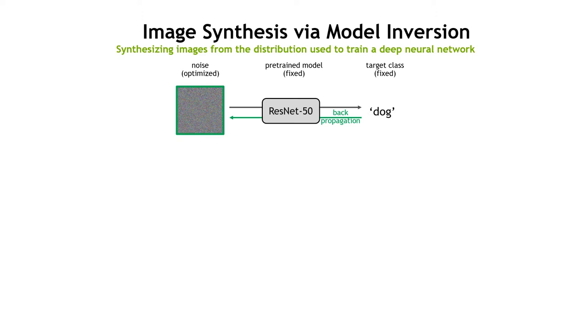In this work, we study a more challenging task that aims at synthesizing natural images from the original training distribution from a pre-trained model. This is done via a model inversion approach, where we optimize random noise into natural images while keeping the model fixed.